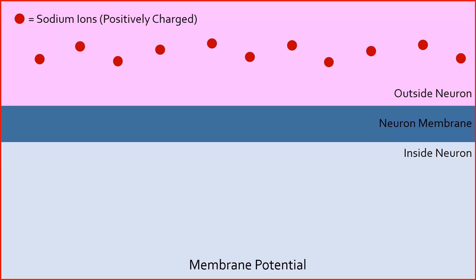Membrane potential is a measure of how positive or negative the inside of the neuron is compared to the outside. At rest, a neuron is more negatively charged inside than outside. Therefore, its membrane potential is negative.